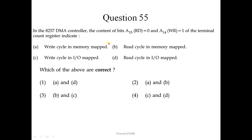Question number 55. In the 8257 DMA controller, the content of bits with RD equal to 0 and WR equal to 1 of the terminal count register indicates a read or write operation. Both read and write are active low pins in the 8257 DMA controller, and the correct options are B and C — so the third option is the correct answer.